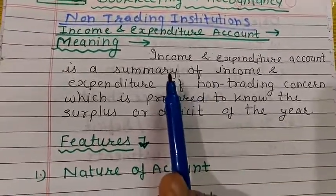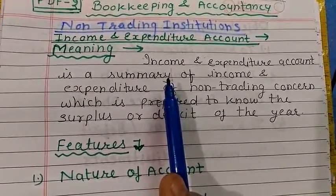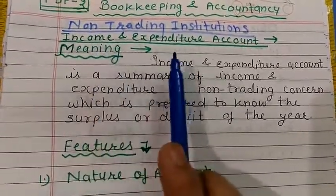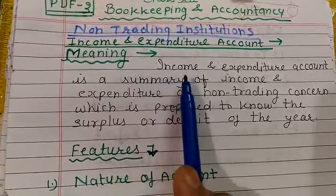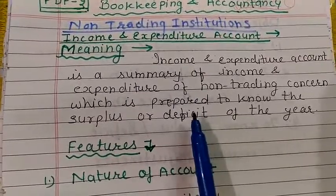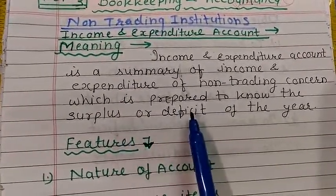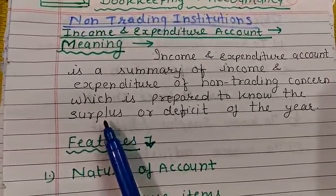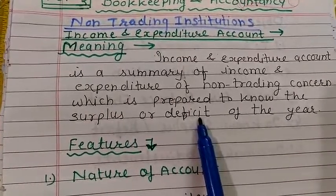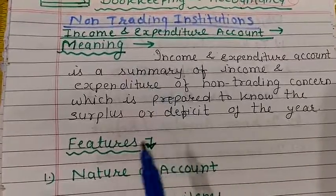This account is a nominal account. Nominal means it is related to income and expenditure, and it is just like the Profit and Loss Account of a trading concern. There are two sides: the debit side and the credit side. If income is excess it is called surplus, and if expenditure is excess it is called deficit. In this way this account is prepared.